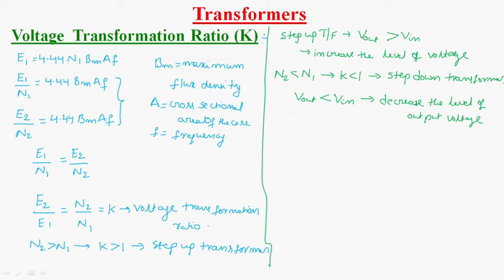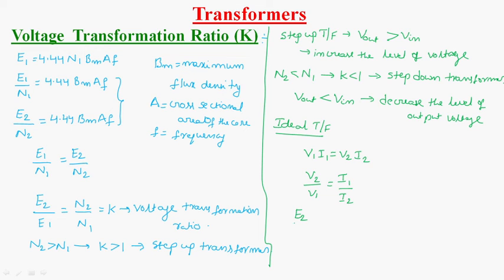While studying the transformer, we are considering it as an ideal transformer. For an ideal transformer, input power is equal to output power — that is, V1 I1 is equal to V2 into I2. From that, we can write V2 by V1 is equal to I1 by I2. So for an ideal transformer, E2 by E1 is equal to V2 by V1 is equal to N2 by N1 is equal to I1 by I2.